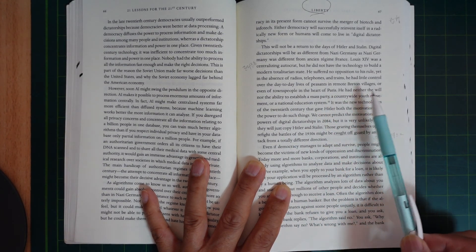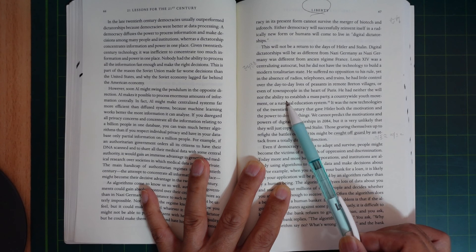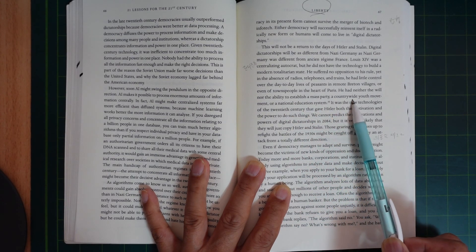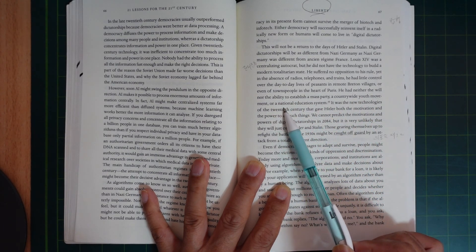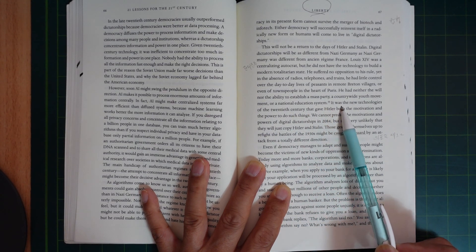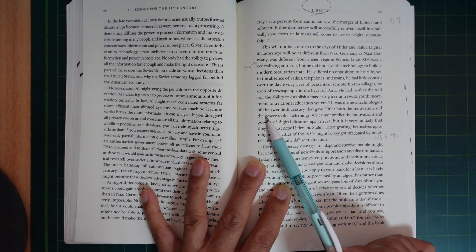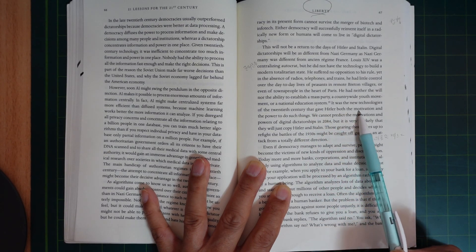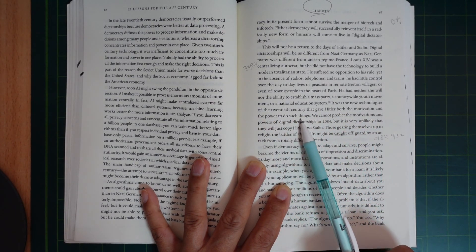He had neither the will nor the ability to establish a mass party, a countrywide youth movement, or a national education system. It was the new technologies of the 20th century that gave Hitler both the motivation and power to do such things.